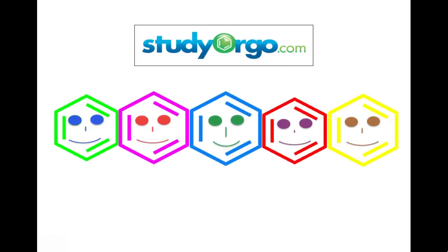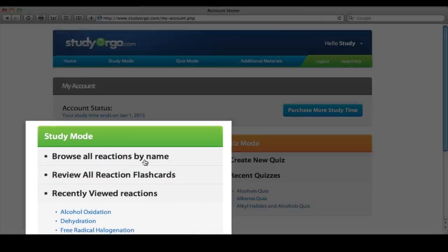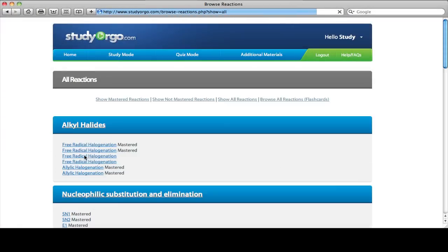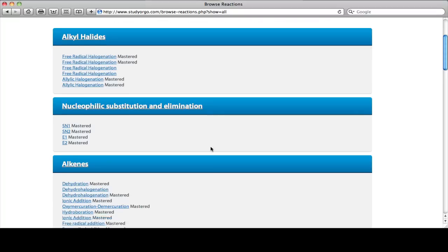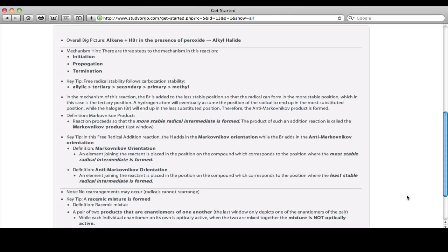Luckily, there's StudyOrgo.com. Our program features two modes, a study mode and a quiz mode. In study mode, we present over 100 reactions that are typically taught in first semester organic chemistry courses. Each reaction is accompanied with a detailed reaction description where we reveal key tips and hints.